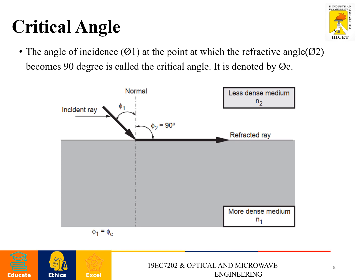Next optical law is critical angle. The critical angle is the angle of incidence theta 1 at the point at which the refracted angle theta 2 becomes 90 degrees. It is also denoted by theta C. Let us assume two different mediums. N1 is the more dense medium and N2 is the less dense medium. If the ray is incident from less dense medium to pass through the more dense medium, and the angle between these two is 90 degrees, this is the concept of critical angle.